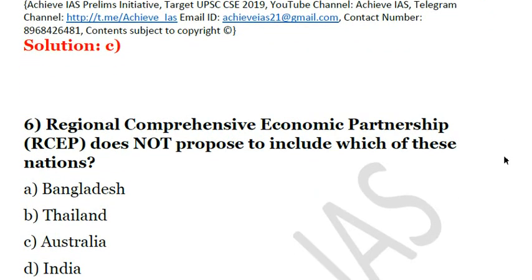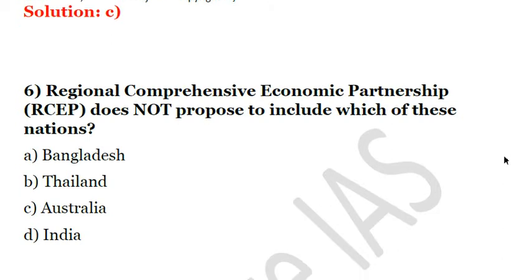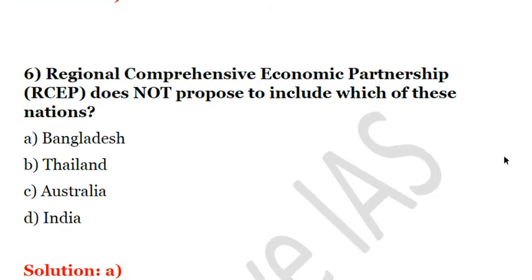Next question: Regional Comprehensive Economic Partnership does not propose to include which of these nations? This is basically a free trade area agreement, and we have been asked which of the following countries is not proposed to be part of it. A. Bangladesh. B. Thailand. C. Australia. D. India. The answer is Bangladesh — Bangladesh is not included in it. The solution is A.